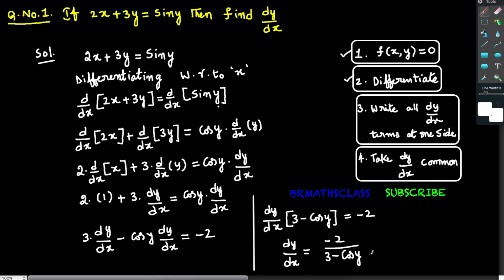Therefore, if 2x plus 3y equals to sin y, then dy by dx is equal to minus 2 divided by 3 minus cos y.